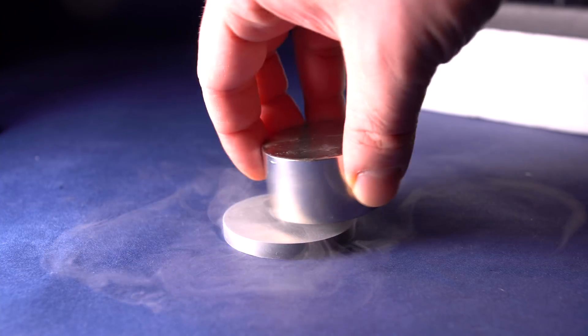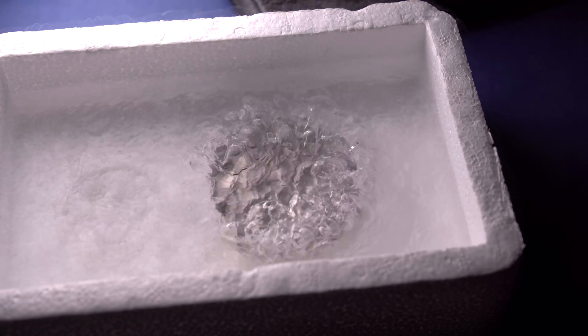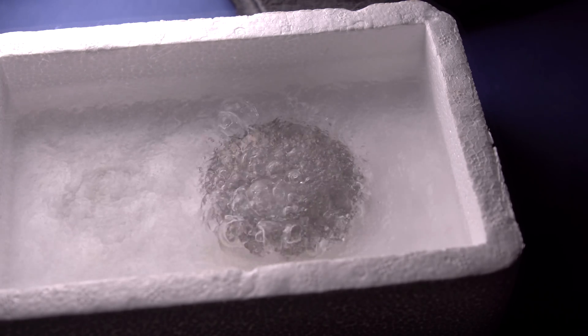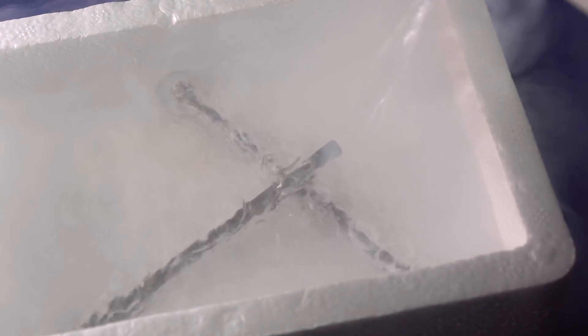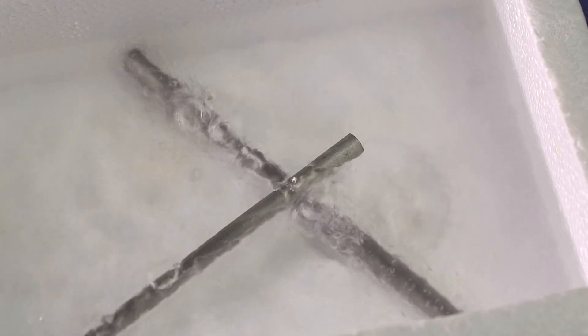Since at 9.2 kelvins, pure niobium acquires the properties of a superconductor. That is, it loses absolutely all internal resistance. If we cool niobium with liquid helium, then it actually becomes a superconductor.